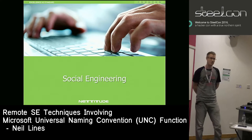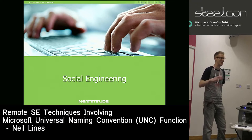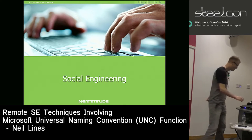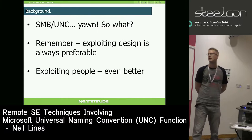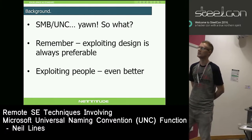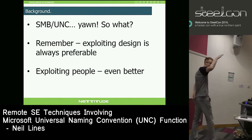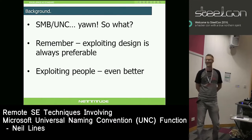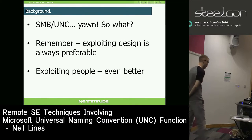Social engineering - we all know about social engineering. SMB, UNC - a lot of people are going to say it's boring, but I still think it's great because it's a function that's very, very exploitable. You combine that with people, who are the most exploitable, and the functionality of people together, and you're on to a winner in my mind.